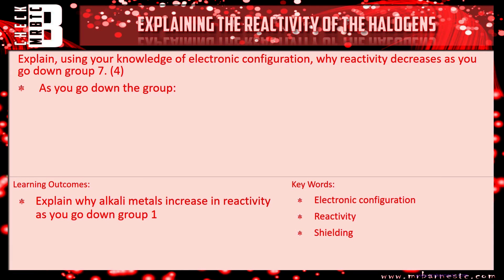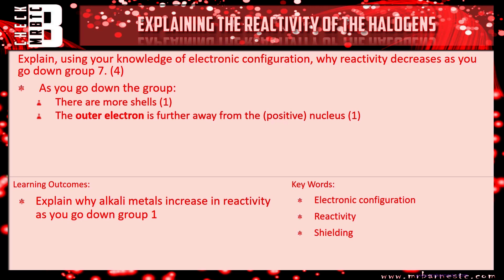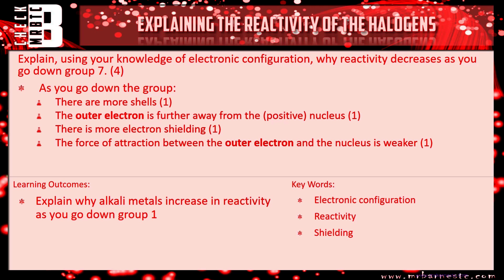Let's go through the answer. As you go down the group, the first thing to talk about is the number of shells — it increases. There are more shells; that gets you your first mark. If there are more shells, that outer shell, or the outer electrons, gets further away from the nucleus. It's important to say your electron is negative and your nucleus is positive because it's got protons in. Then you can talk about the fact there's more electron shielding — more electrons getting in the way, weakening that force of attraction, which is the fourth marking point. The force of attraction between the outer electron and the nucleus is weaker. Your final marking point is saying it is harder to gain the outer electron to fill your outer shell. Any four of those five marking points would have got you four out of four.